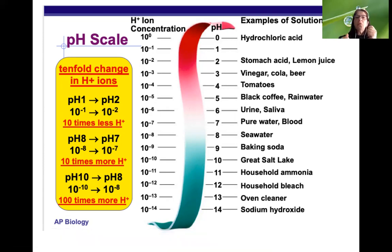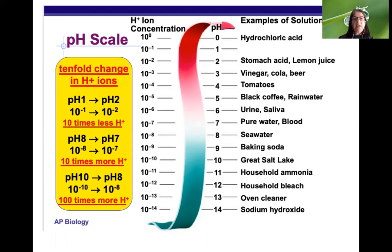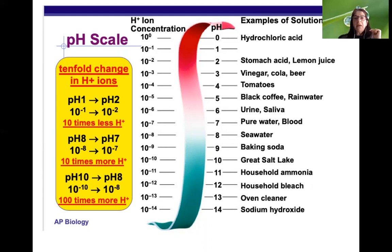A single unit of pH change is a 10-fold change in hydrogen ion concentration. If you go from pH 1 to pH 2, you have 10 times less hydrogen ions. If you go from pH 8 to pH 9, you also have 10 times less hydrogen ions. If you go from pH 8 to pH 7, you have 10 times more hydrogen ions. If you go from pH 7 to pH 4, you have 1,000 times more hydrogen ions. Going lower increases hydrogen ion concentration; going higher decreases it.